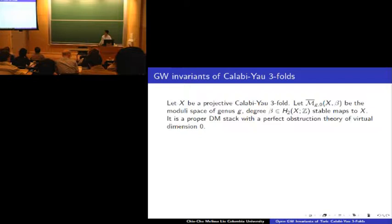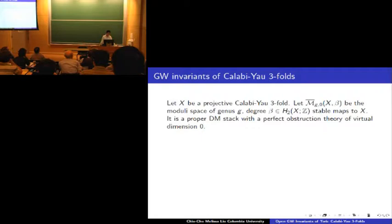Then this moduli space is a proper Deligne-Mumford stack with a perfect obstruction theory of virtual dimension zero. If you prefer the differential geometric language, it is a compact singular orbifold. It's singular, so it does not have a tangent bundle, but it has a virtual tangent bundle which is the difference of two vector bundles on the moduli space, and these two vector bundles have the same rank. So the virtual dimension of the tangent bundle is zero.